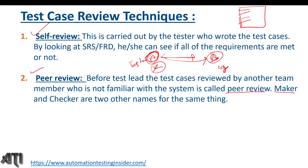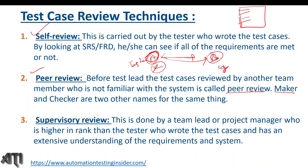The third type is supervisory review, done by a team lead or project manager who is higher in rank than the tester and has extensive understanding of requirements and system. In most cases, self-review and peer review are mandatory processes we always follow. Supervisory review by the test lead or test manager happens in some cases but is not always mandatory.